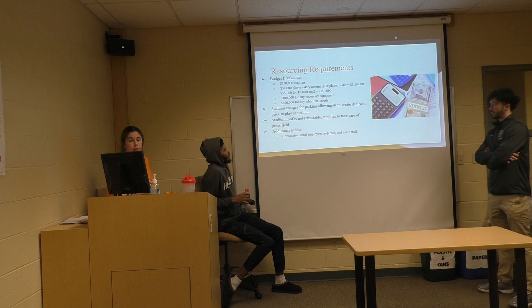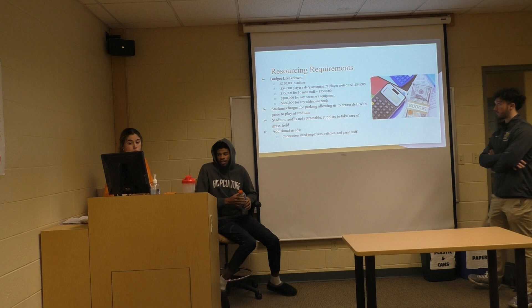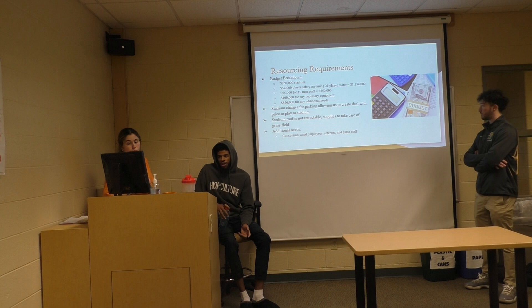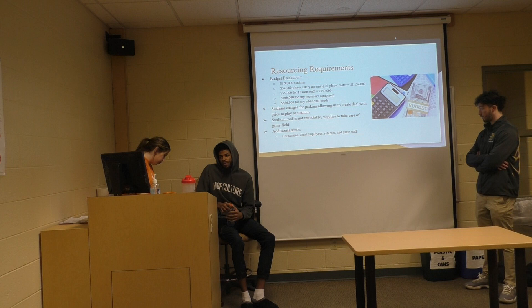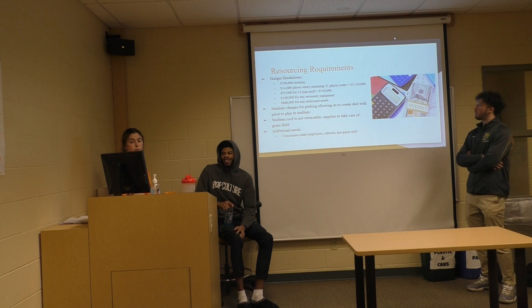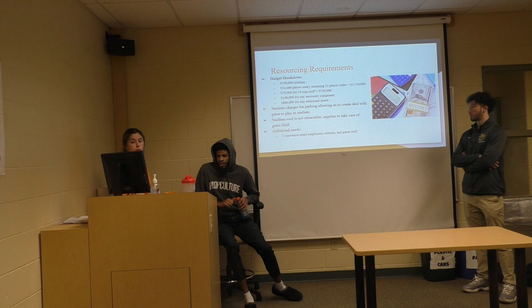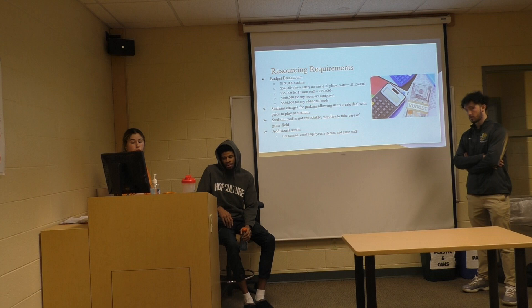As far as our resource requirements go, here is our budget breakdown. The budget overview is around $3 million. Breaking it down: $350,000 for the stadium; $54,000 per player salary assuming 21 people on the roster, totaling about $1.1 million; $55,000 for a 10-person staff including coaches and trainers; $100,000 for necessary equipment like jerseys, cleats, gear, and travel suits; and $866,000 with $100,000 set aside for additional needs. Stadium parking charges would allow us to create pricing deals, and since the stadium roof is not retractable, we'd need supplies to care for the grass field. Additional needs include concession stand employees, reps, and game staff.